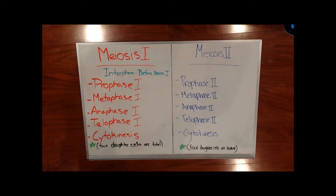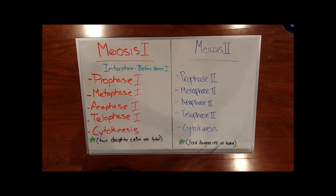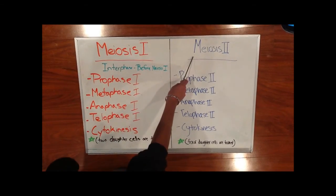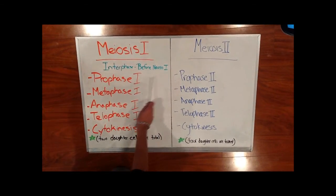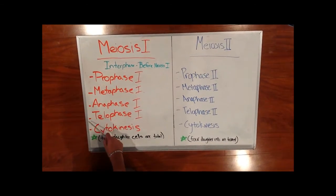There are two main components of meiosis, each comprising multiple phases. There is meiosis 1 and meiosis 2. Before that, interphase occurs. In meiosis 1, prophase 1, metaphase 1, anaphase 1, telophase 1, and cytokinesis occurs.